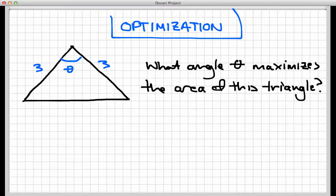So here's a very basic problem. We have a triangle here, it's an isosceles triangle. Two of the lengths of the sides are three and three. We're not given the length of the third side, but we are given an angle between the two sides that have length three. That angle is theta. And the question is, what angle theta maximizes the area of this triangle?